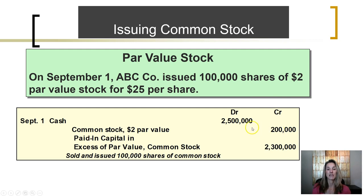The amount in excess of the par value that is paid into capital is going to be recorded in the paid-in capital in excess of par value on common stock. Both of these are equity accounts and they both have credit balances.